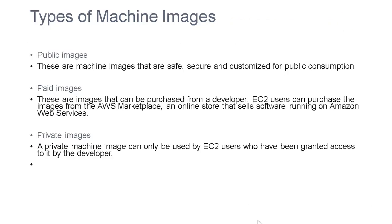Next, types of machine images. There are three types of machine images: public images, paid images, and private images. Public images are machine images that are safe, secure, and customized for public consumption.